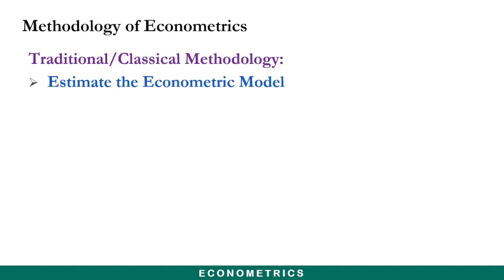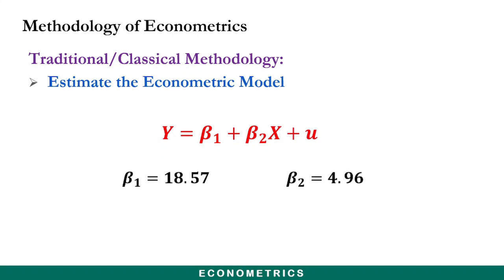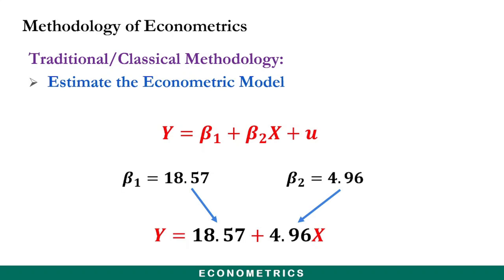After obtaining the data, you estimate the econometric model. Using the data from whatever database, you estimate the parameters β₁ and β₂. For example, assuming β₁ = 18.57 and β₂ = 4.96, you substitute these values into the econometric model to obtain the estimated model. Keep in mind this is the consumption function transformed into an econometric model, where Y is consumption and X is income.